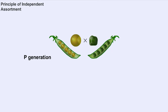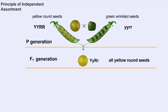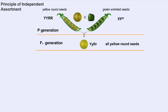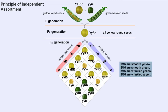However, Mendel expanded these monohybrid crosses to include two traits simultaneously inherited, such as seed color and seed shape. He began with yellow and round seeds, which were dominant over green and wrinkled seeds. The F1 generation produces all yellow and round seeds, as expected from the principles of dominance and segregation. However, if the F1 offspring are allowed to self-fertilize, nine different genotypes and four different phenotypes are produced. Mendel was able to show that yellow and round seeds (Yr) do not always occur together, and the presence of one allele for the yellow seed trait (Y) has no impact on the presence of the allele for the round seed trait (R). This is Mendel's principle of independent assortment.